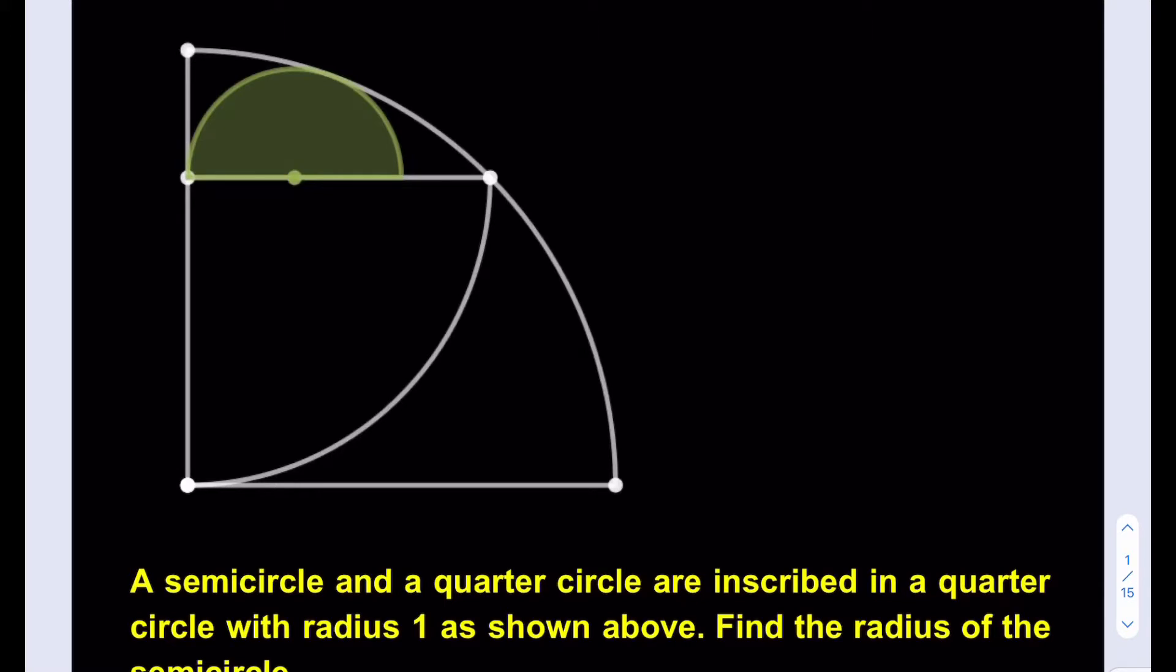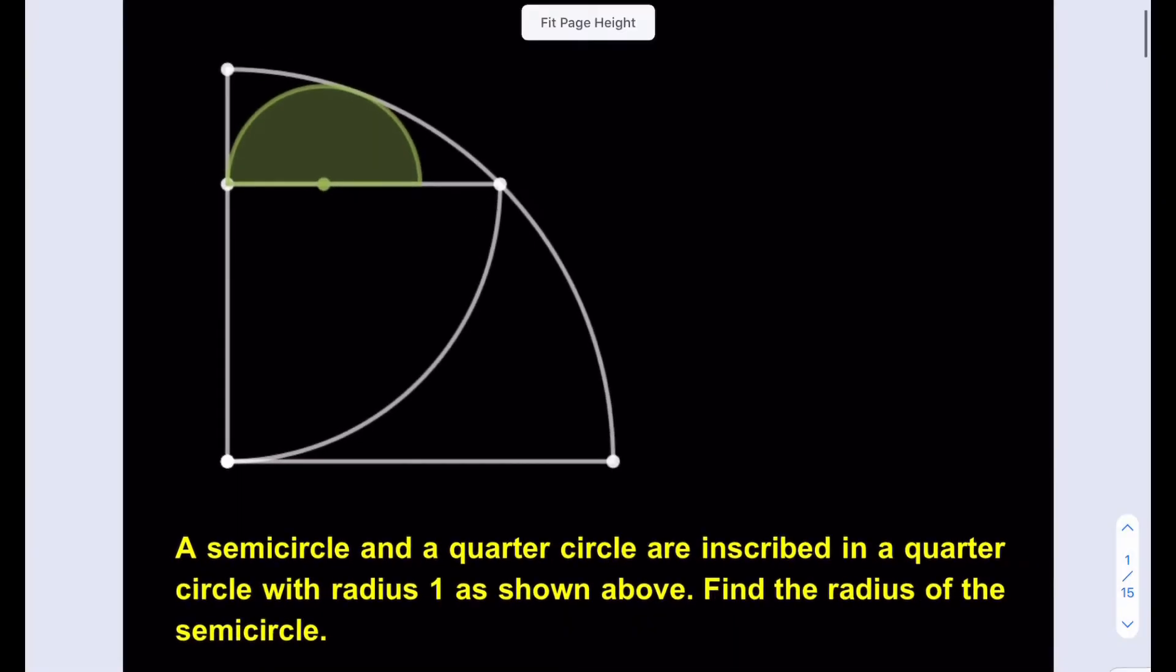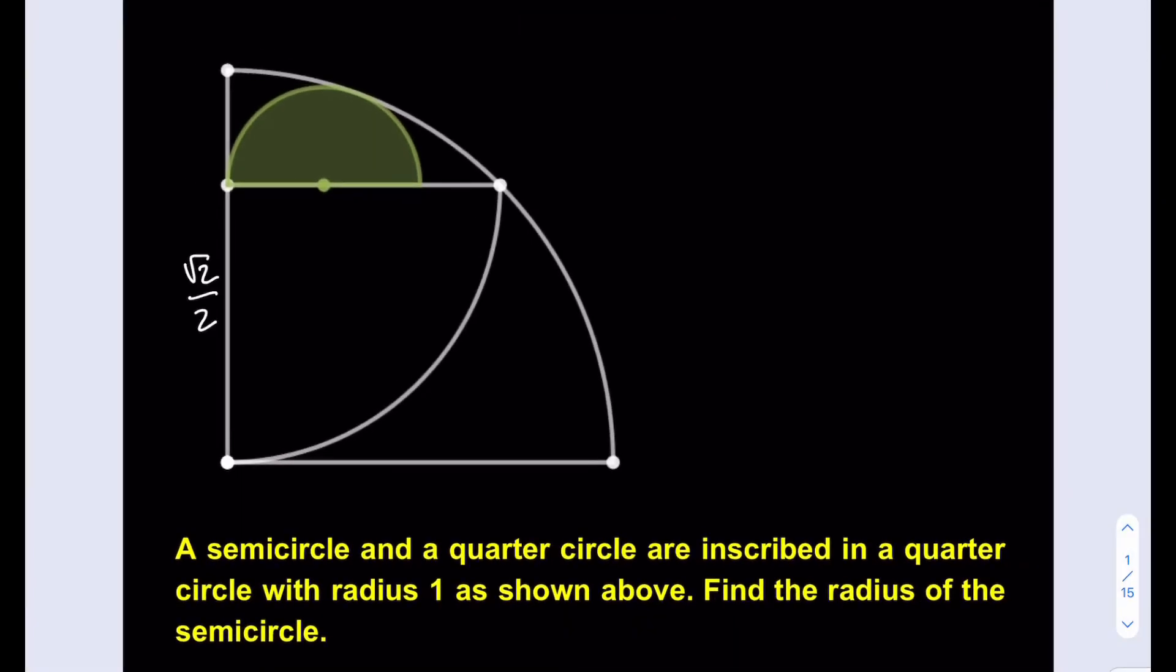Okay, so let's go ahead and make some connections here. In a previous video, if you remember, we had this kind of setup and we had found the radius of the quarter circle to be root 2 over 2.